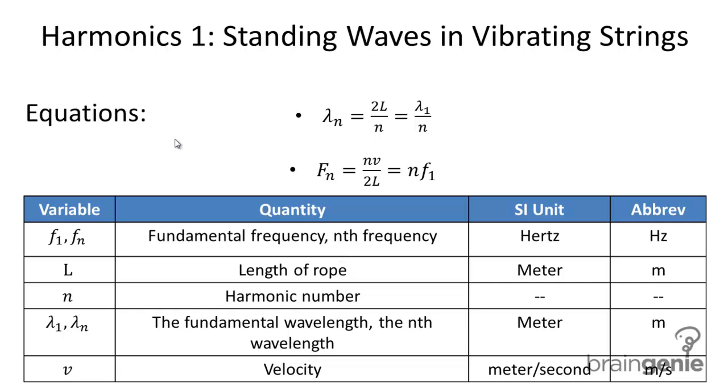Two important equations. To determine, first, the harmonic wavelength or the fundamental wavelength, we use the equation lambda_n = 2L/n, two times the length of the string divided by the harmonic number.